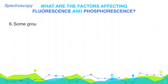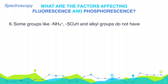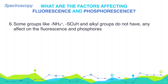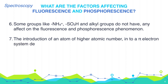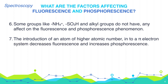Some groups like ammonium, SO3H, and alkyl groups do not have any effect on fluorescence and phosphorescence. The introduction of an atom of higher atomic number into a pi-electron system decreases fluorescence and increases phosphorescence.